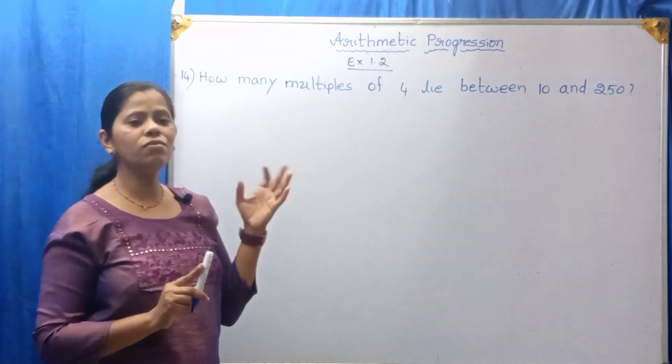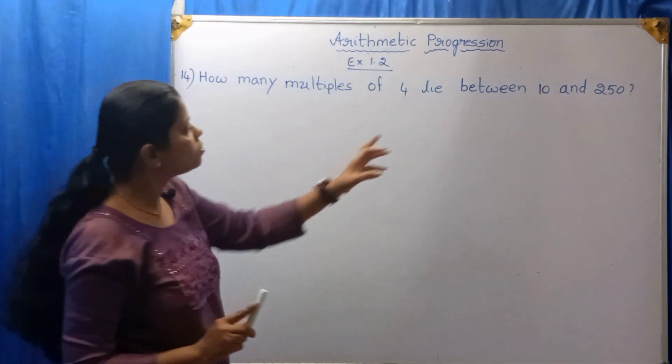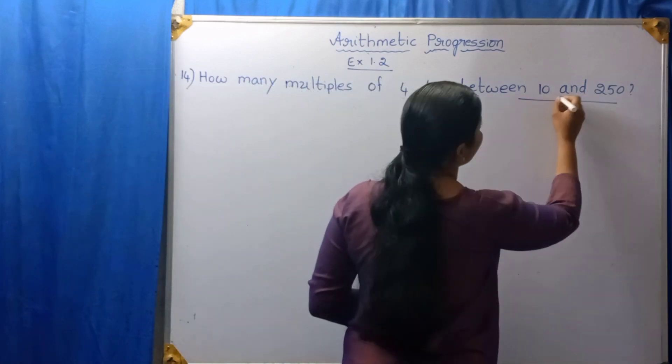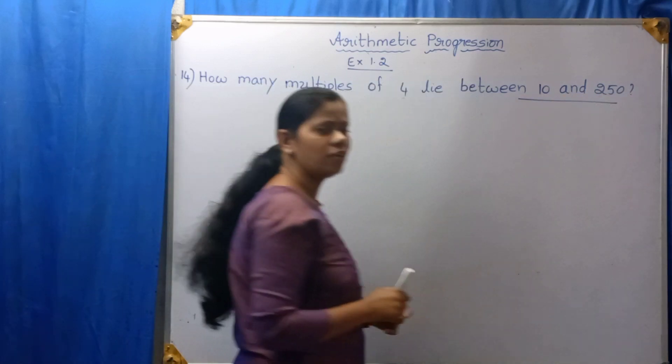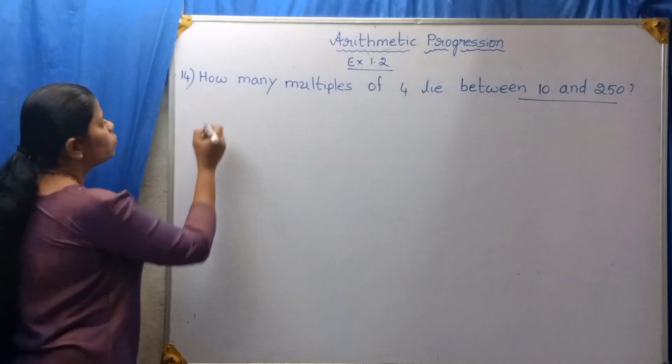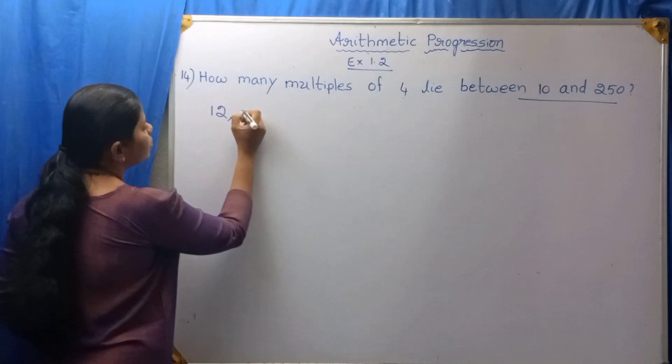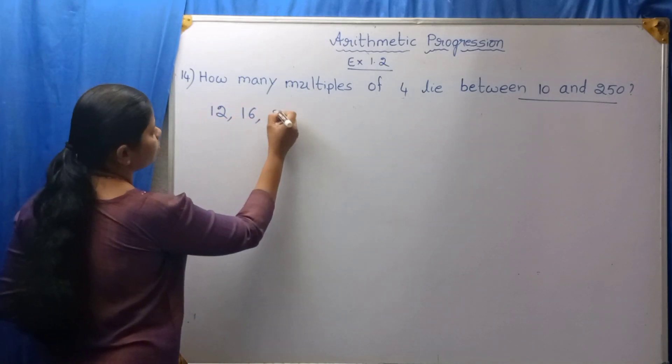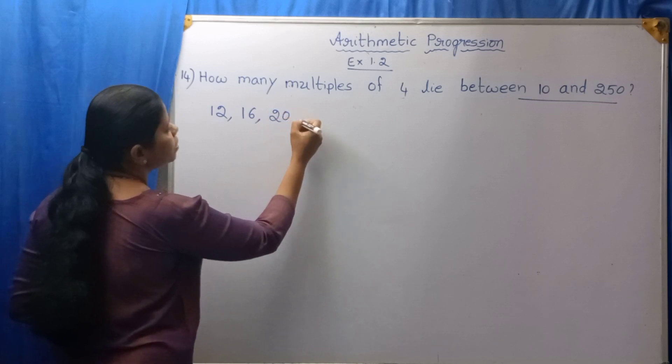But we should not consider 4 and 8 because they told us between 10 and 250. Therefore, the first number is 12.